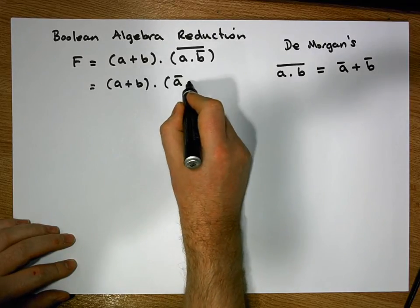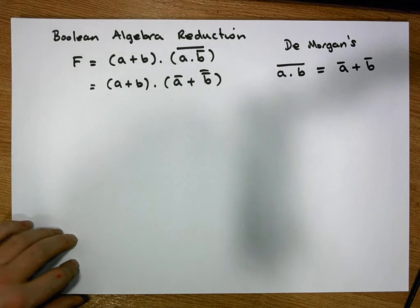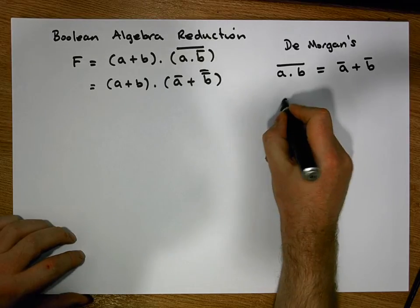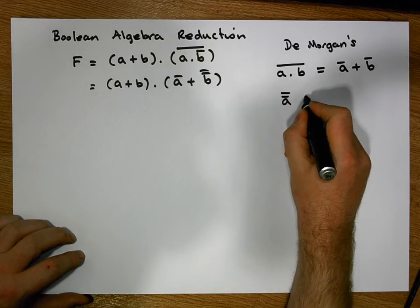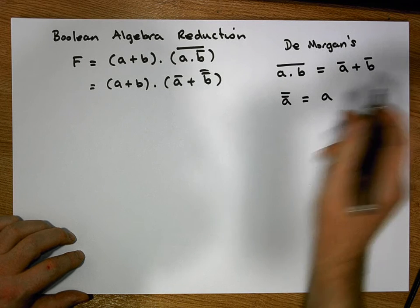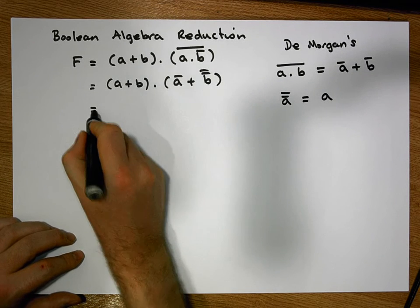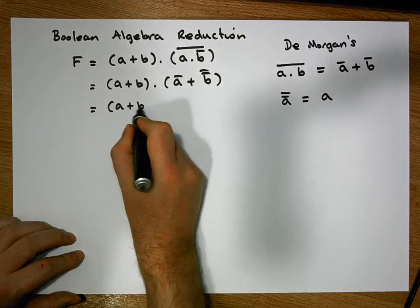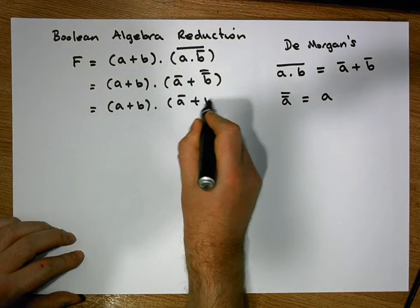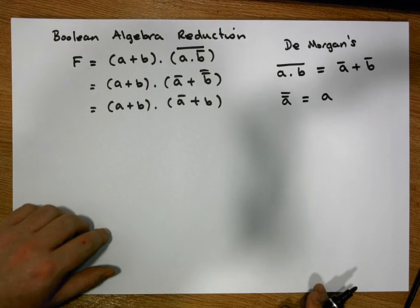We also know another identity: Ā̄ (A double-negated) is equivalent to A. This is known as the double negation law. So applying that, this now reduces down to (A OR B) AND (Ā OR B).